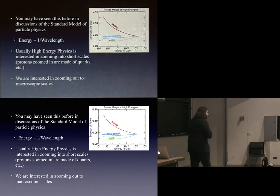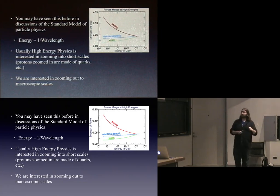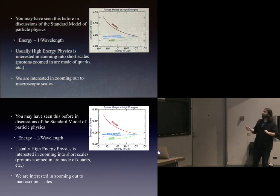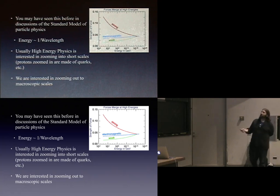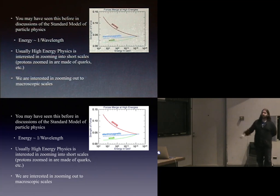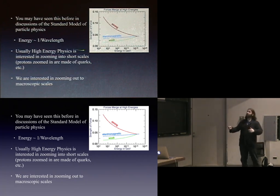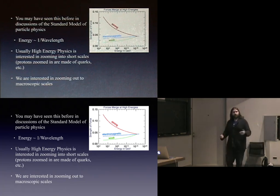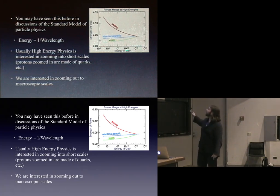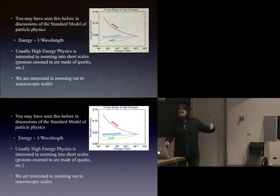If you've come to earlier lectures, you may have heard this about the Standard Model of particle physics: the coupling constants — strong force, electromagnetic force, weak force — aren't constants; they depend on the energy scale. Energy is basically one over the wavelength. As I increase in energy, I go to shorter distances. High-energy physicists zoom in and see quarks; zoom out and you see protons make up atoms. We're interested in lab-scale physics, so we zoom out — going down in energy, or to longer length scales.